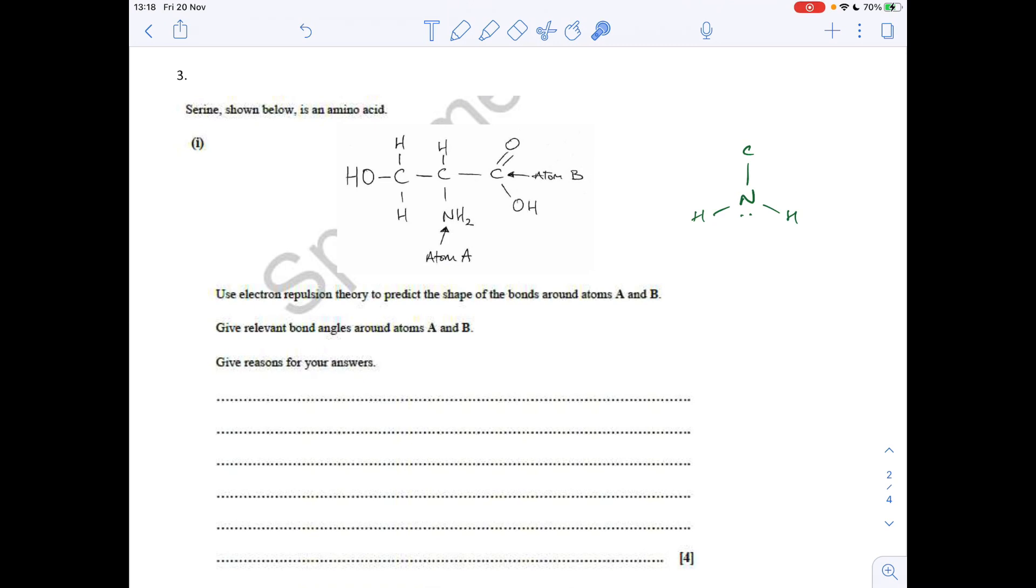So the shape associated with that is pyramidal. The angle, the bond angle around that nitrogen, well, four electron regions, 109.5, but we have to take off two and a half degrees because that lone pair, bonding pair repulsion is greater. And so it actually pushes these bonds closer together. So the angle would be 107.